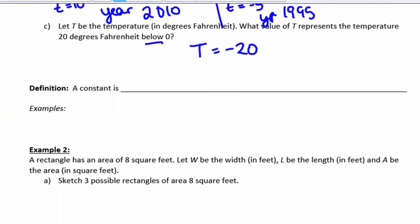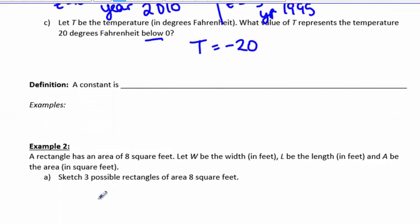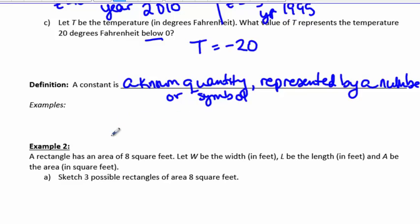Definition. A constant is a known quantity represented by a number or symbol. Occasionally we will know the value of constants such as 2 or 3.